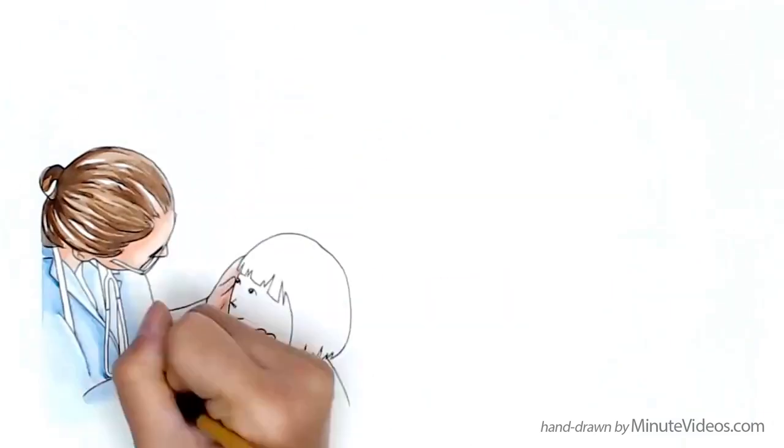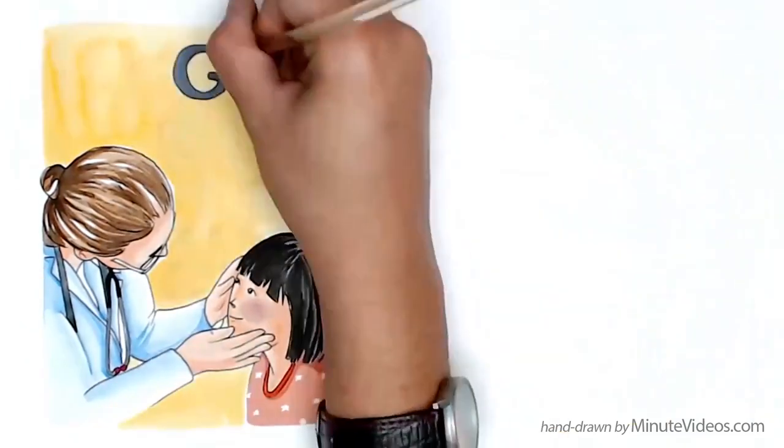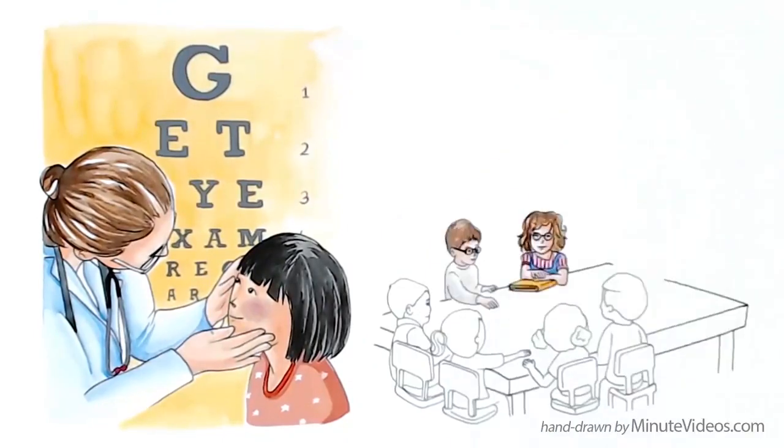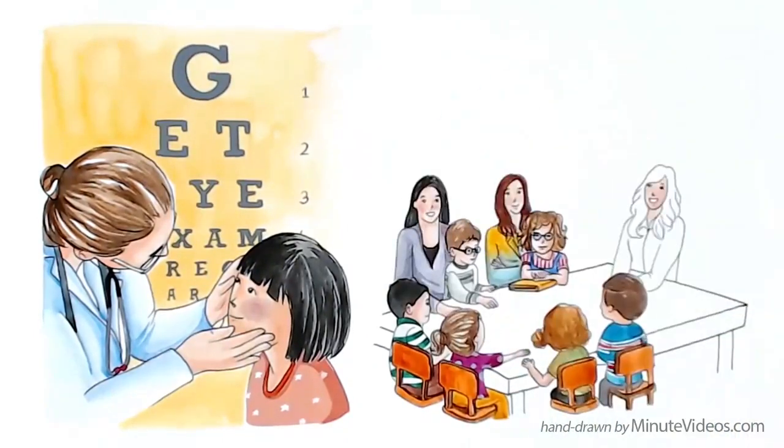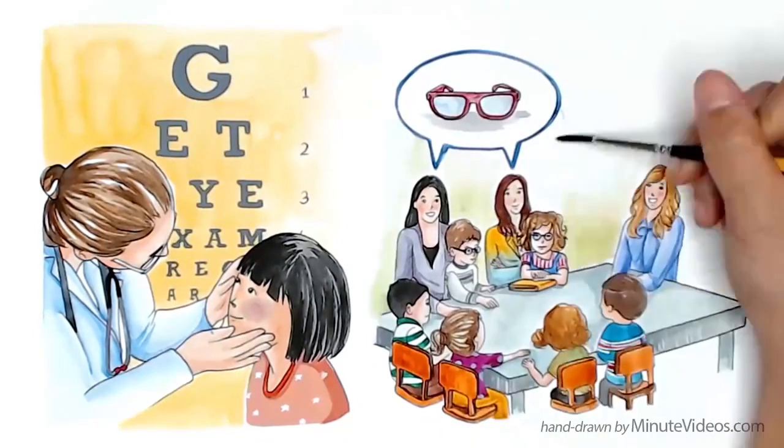That's why all kids should have a professional eye check every one to two years. If that cannot be provided, it's important for parents and teachers to learn how to detect a condition.